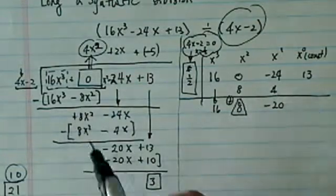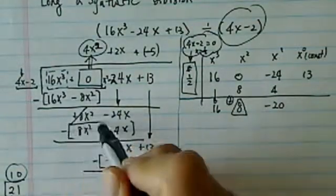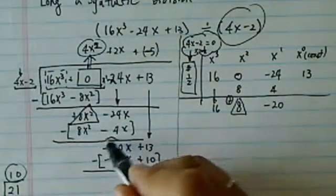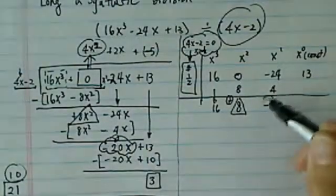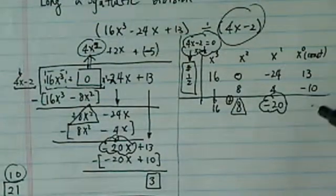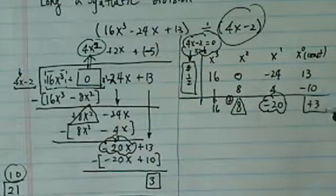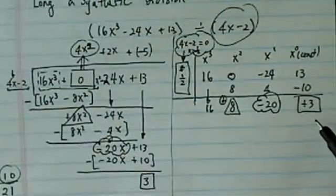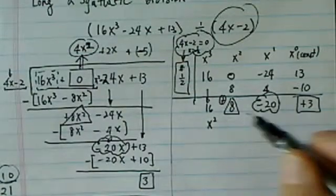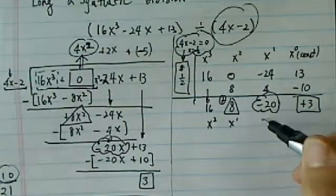Now you notice this 8 is really equivalent to this triangle term here: 8x squared. Next term, minus 20, is really equivalent to this term. Isn't that funny? Everything works out. This is minus 10, we'll have a remainder of positive 3. This is exactly the same.